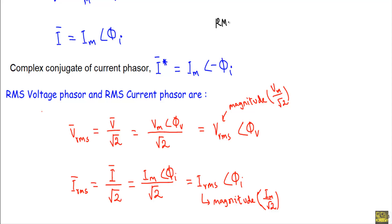In an AC circuit we use the RMS value of voltage and current, so we express the phasors as RMS phasors. The RMS voltage phasor Vrms = V/√2 = (Vm∠φv)/√2 = Vrms∠φv, where the magnitude Vrms = Vm/√2. Similarly, the RMS current phasor Irms = I/√2 = (Im∠φi)/√2 = Irms∠φi, where the magnitude Irms = Im/√2.